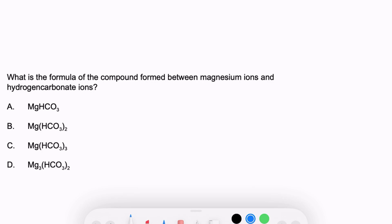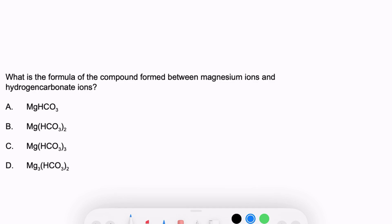The first question says, what is the formula of the compound formed between magnesium ions and hydrogen carbonate ions? We're looking for a formula, so let's write out our ions. Magnesium is always going to form a plus 2 ion because it's in group 2 on the periodic table. And hydrogen carbonate, HCO3, is a common polyatomic ion that hopefully your teacher told you to memorize, and that is going to have a negative 1 charge.